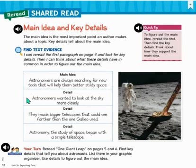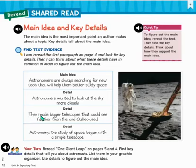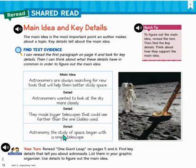The first detail given is: astronomers wanted to look at the sky more closely. The second detail given is: they made bigger telescopes that could see farther than the one Galileo used. And the third detail is: astronomy, the study of space, began with a simple telescope.